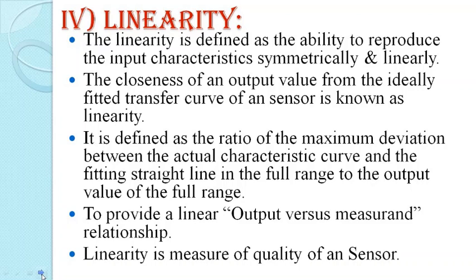Now the fourth static characteristic of the sensor is linearity. Linearity is nothing but a relation between input and output — it provides a linear relation between output versus measured value. Linearity is a major quality of sensors, defined as the ability to reproduce the input characteristics symmetrically and linearly. It is also known as the closeness of an output value from the ideally fitted transfer curve, and is the ratio of maximum deviation between the actual characteristics curve and the fitting straight line in the full range to the output value of the full range.